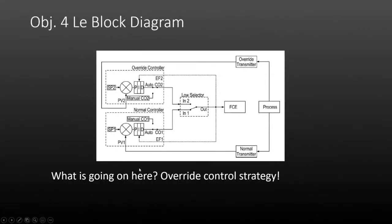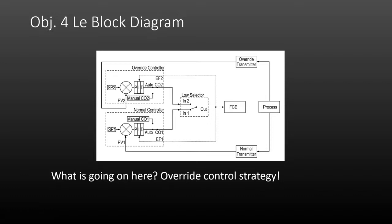Last but not least, the block diagram for selective control. Here's an override control strategy — we have a normal transmitter, an override transmitter, and a low selector simply selecting between the two different measurement signals and providing that to the output. Oddly enough, they don't show the reset tieback in this block diagram. That, my friends, is the end of the entire process section. Congratulations.